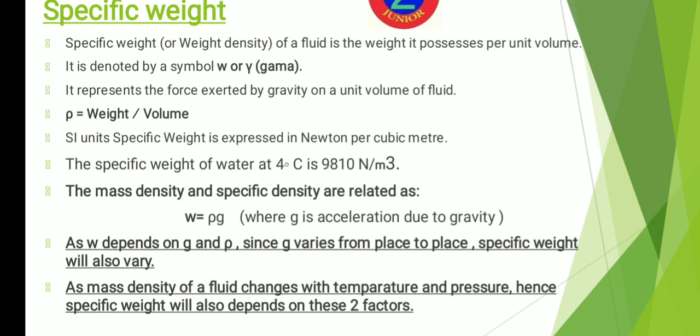You know that specific weight depends on acceleration due to gravity and mass density. Since acceleration due to gravity varies from place to place, your specific weight will also vary. Furthermore, since specific weight is related to mass density and acceleration due to gravity, and mass density changes with pressure and temperature as discussed in the previous slide, your specific weight will also depend on these two factors.